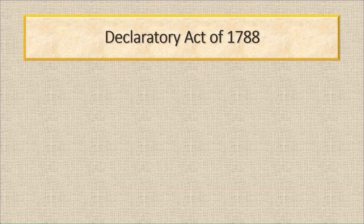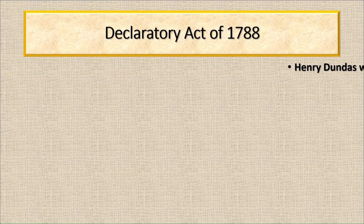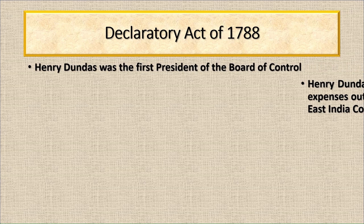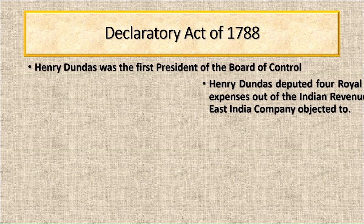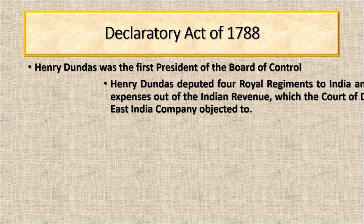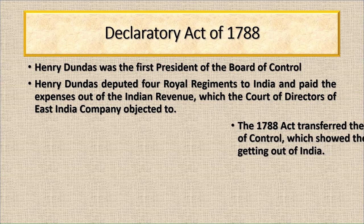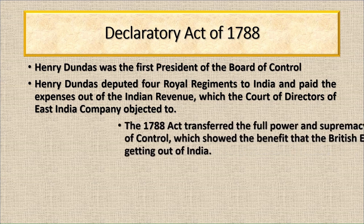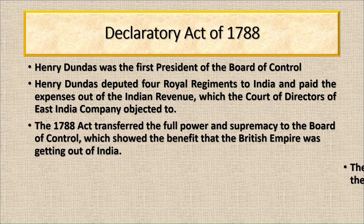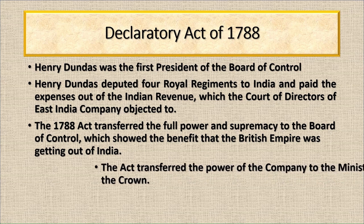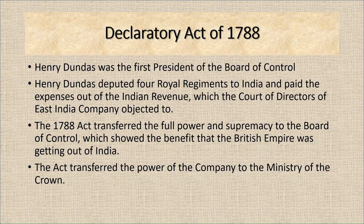Next, the Declaratory Act of 1788 was also an influencing factor. Henry Dundas was the first president of the Board of Control. He deputed four royal regiments to India and paid the expenses out of Indian revenue, which the Court of Directors of the East India Company objected to. The 1788 Act transferred full power and supremacy to the Board of Control, showing the benefit Britain was gaining from India, and transferred the power of the company to the Ministry of the Crown.